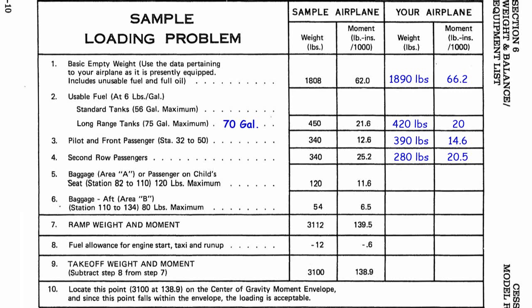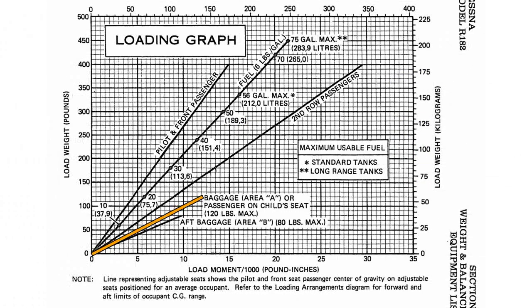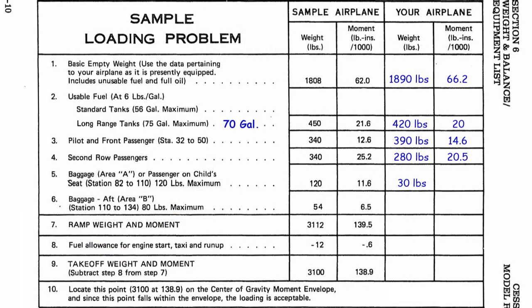Next is baggage. We're going to have about 30 pounds of baggage. Going back to the loading graph, we find the baggage line, follow 30 pounds down — the moment is 3.0. So we put 3 as the baggage moment. We have no baggage in area B, so that's 0. Now we add up the weight column, which gives us 3,010 pounds, and we add up the moment column, which gives us 124.3. This is our ramp weight — what the airplane weighs when we're all on board.